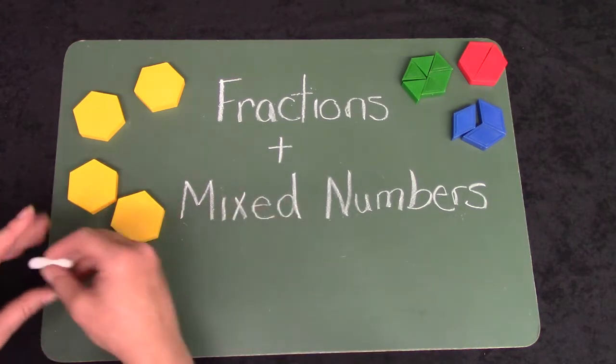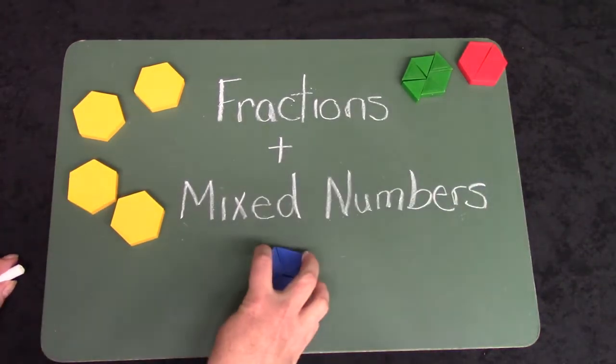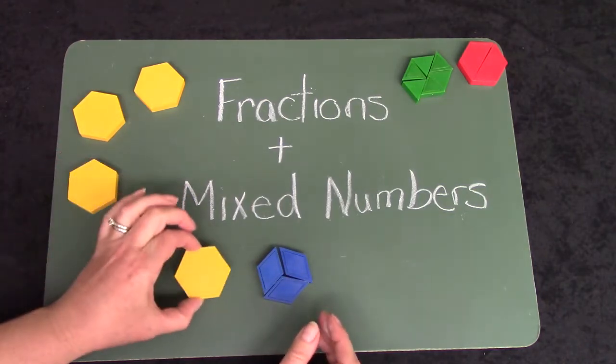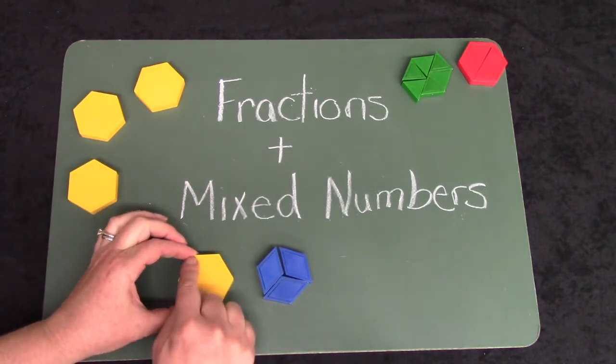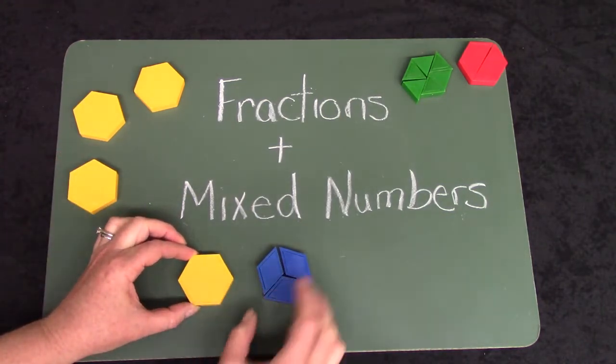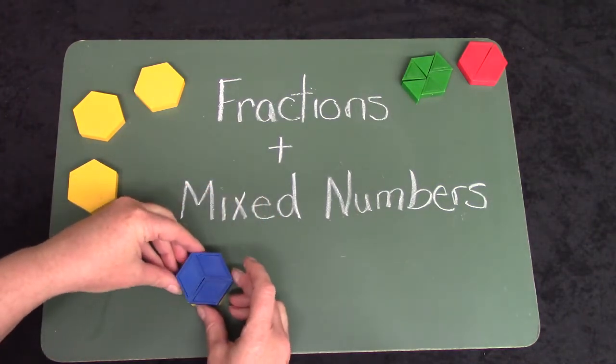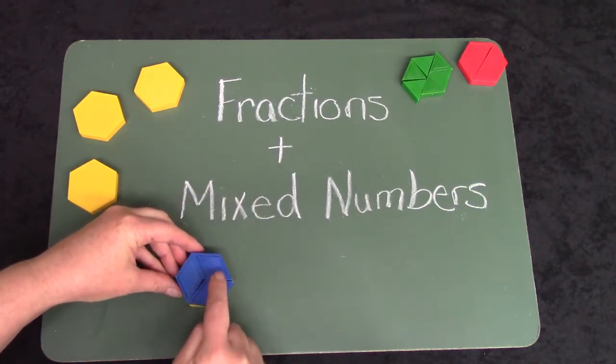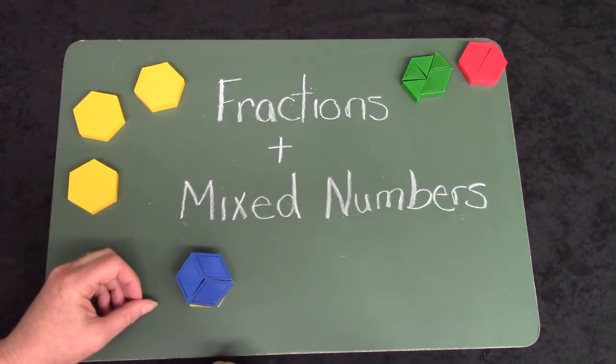Did you remember that a fraction is part of a number? So if we were talking about one full hexagon, let's see. It would take one, two, three trapezoids to make a full hexagon.